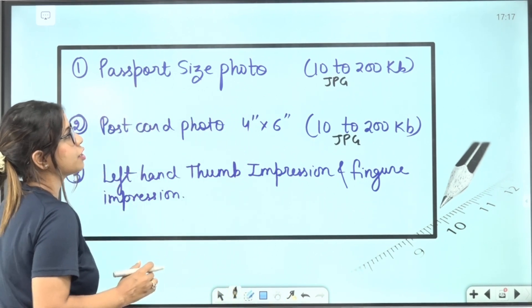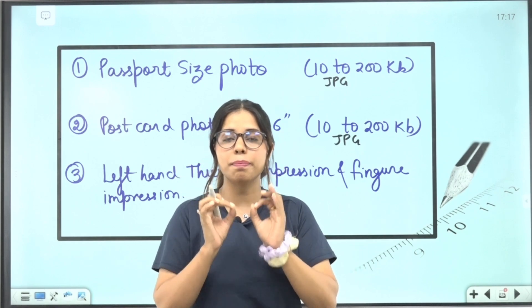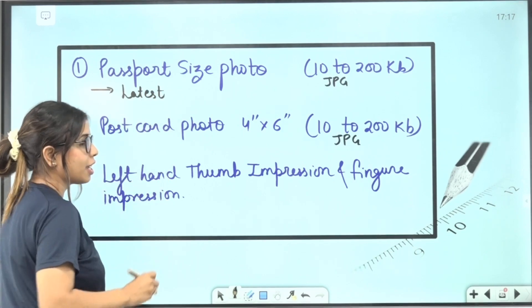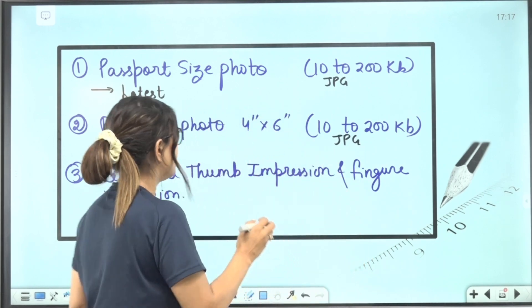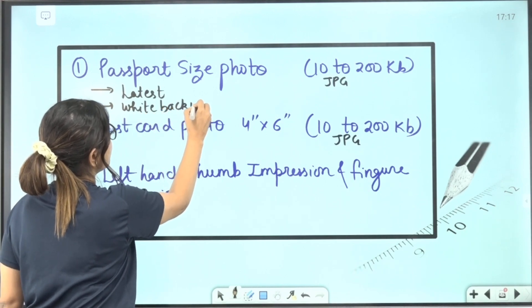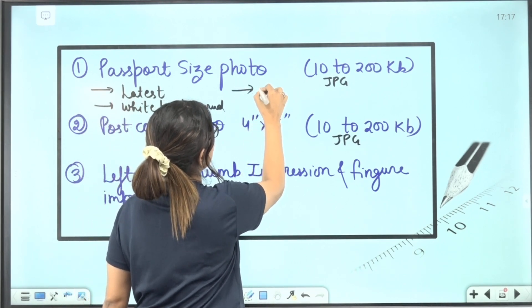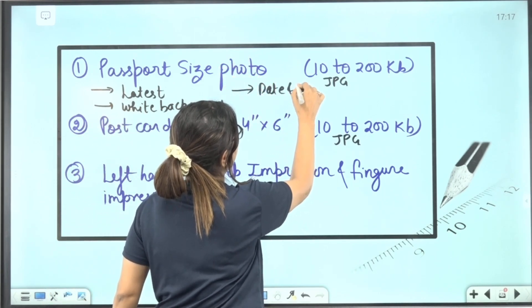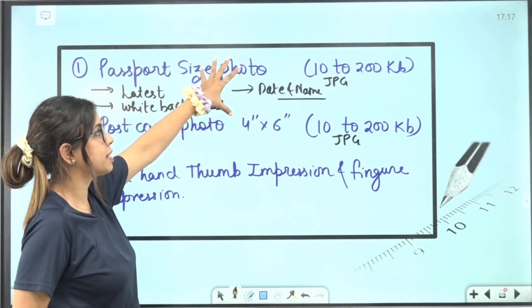So, first of all, the passport size photograph. Passport size photograph is 10 to 200 KB. You need to be in the JPG format. And this passport size photograph is your latest, which you need from recent or 2023 1st Jan. It should be in white background. The white background, dear, there is another important thing in it. And that is my dear students, the date of the day that you have clicked the photo and to mention your name under the photo. So, these things must be there in a passport size photograph. Keep it into KB's attention.